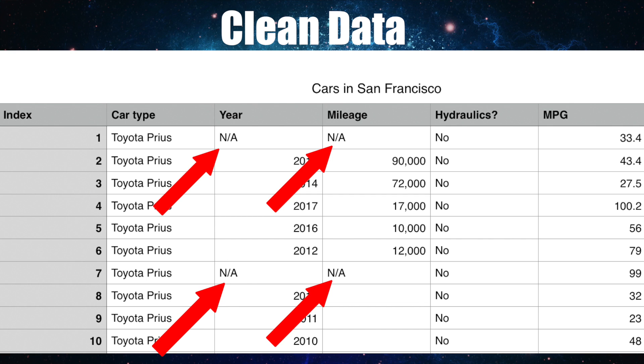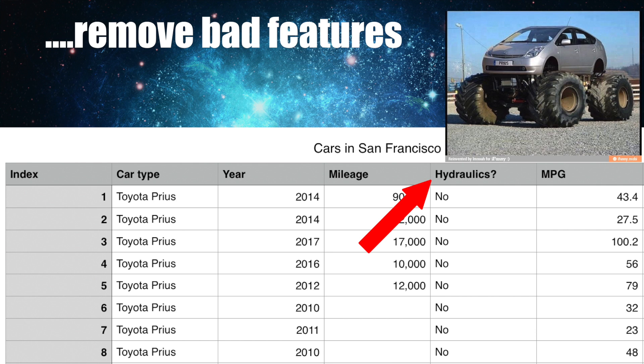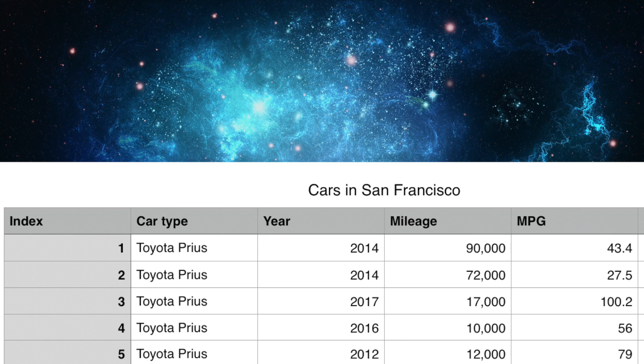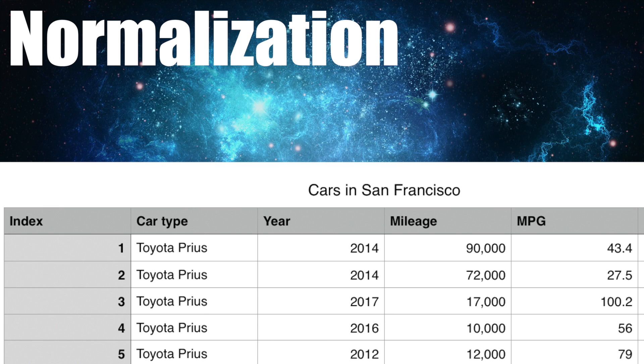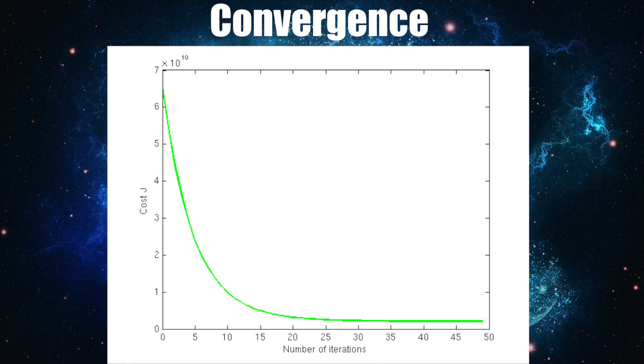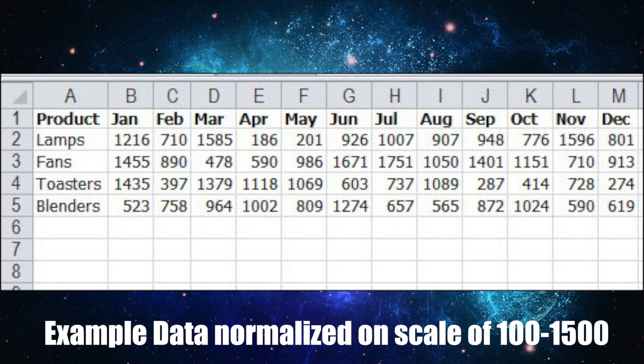Once we've got a dataset that we want to use, we want to process it. We can clean the data of empty values, remove features that are not necessary, but these steps don't require math. A step that does, though, is called normalization. This is an optional step that can help our model reach convergence, which is that point when our prediction gives us the lowest error possible, faster since all the values operate on the same scale. This idea comes from statistics.